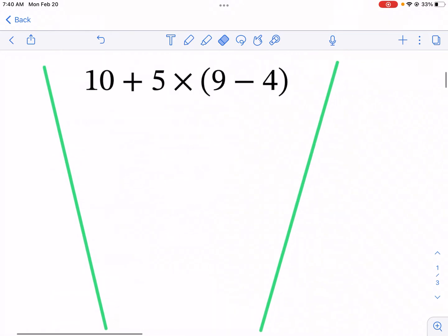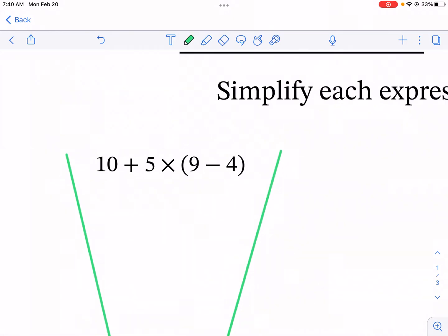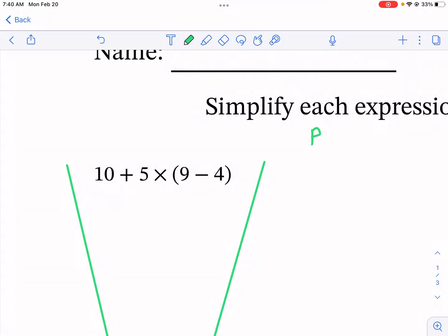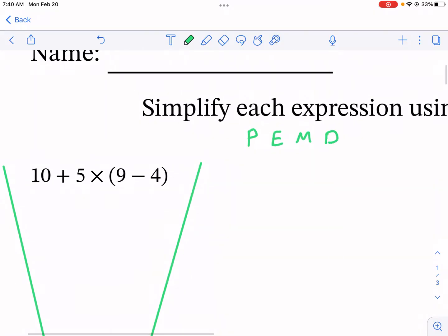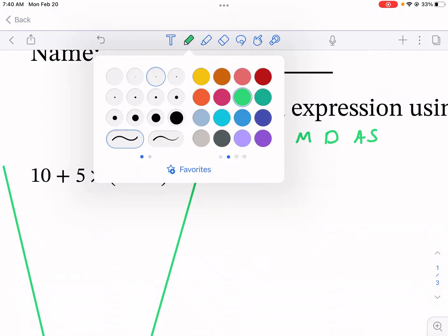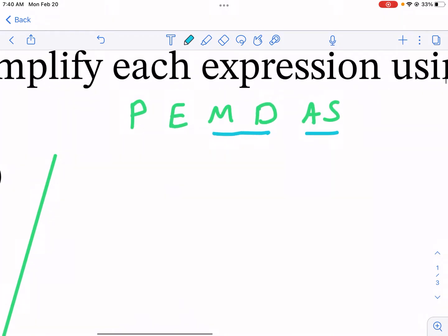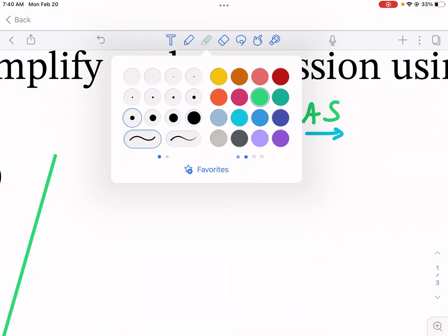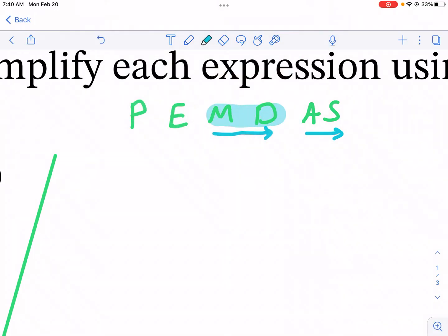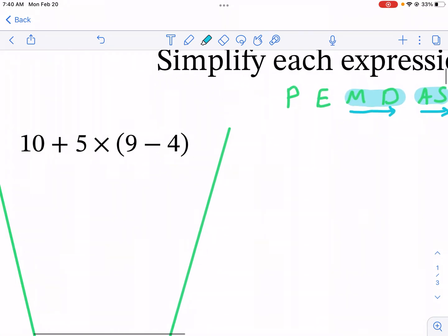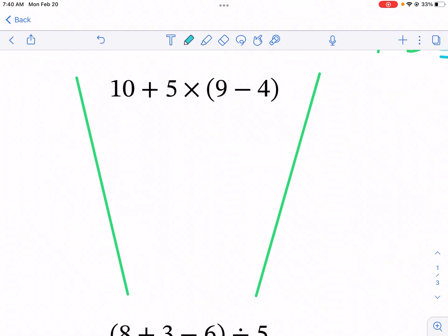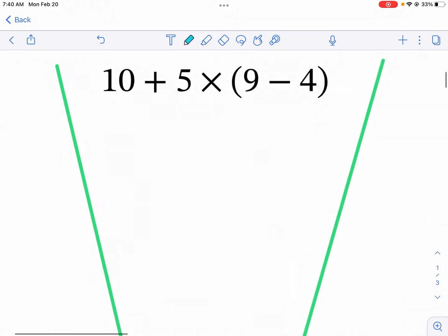Now one of the things I highly recommend is writing PEMDAS somewhere on your paper. I also like to draw a line underneath those M's and D's and the A's and S's. The reason why is because we're gonna be treating these as equals—the M and the D, multiplication and division, and the addition and subtraction. We're just gonna do whatever appears first left to right. A lot of people think multiplication always comes first—that is not necessarily true, so make sure to keep that in mind.